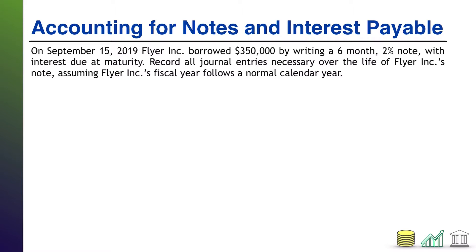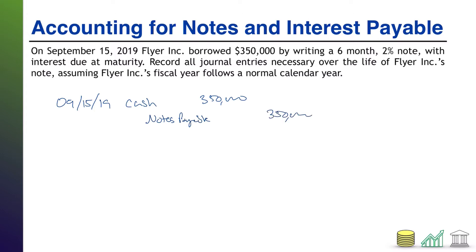All right, welcome back. So here we go. The first date that we are going to record a journal entry related to this note is on the day we signed it — September 15, 2019. Flyer Corp borrowed $350,000, so that means we are getting cash: debit cash $350,000. And we did it by signing a note agreeing to pay later — we call that a note payable for $350,000. So that is our first journal entry.